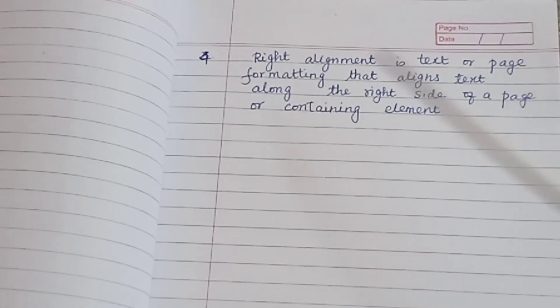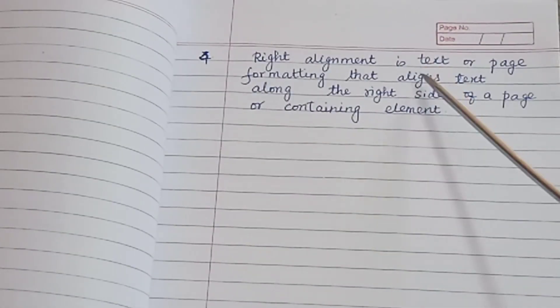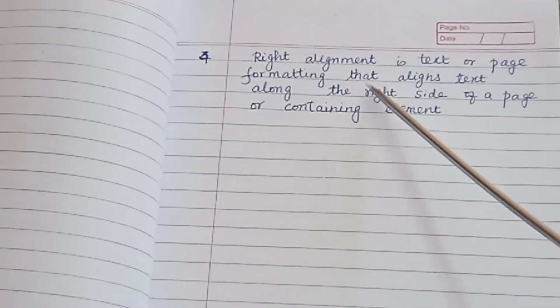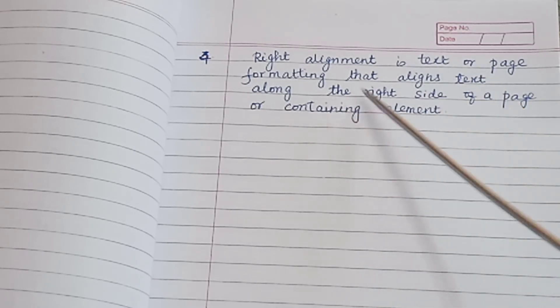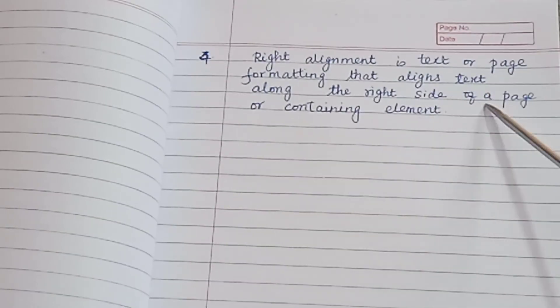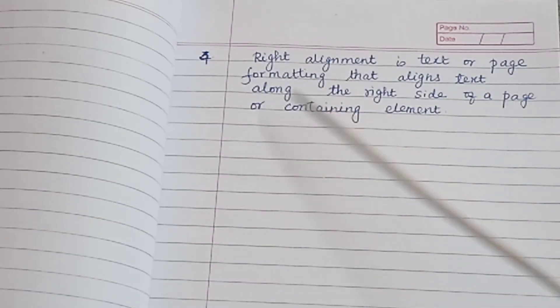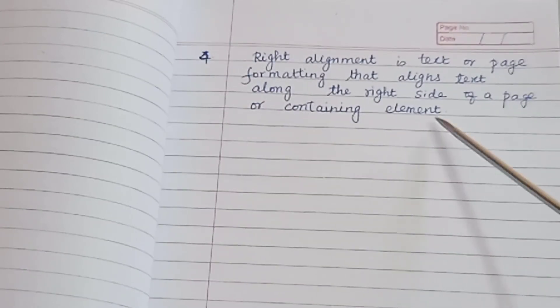What is Right Alignment? Right alignment is text or page formatting that aligns text along the right side of a page or containing element.